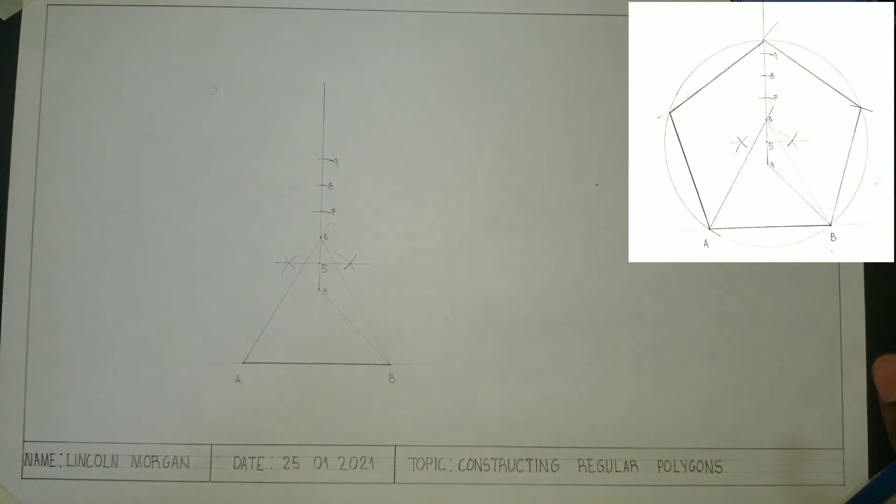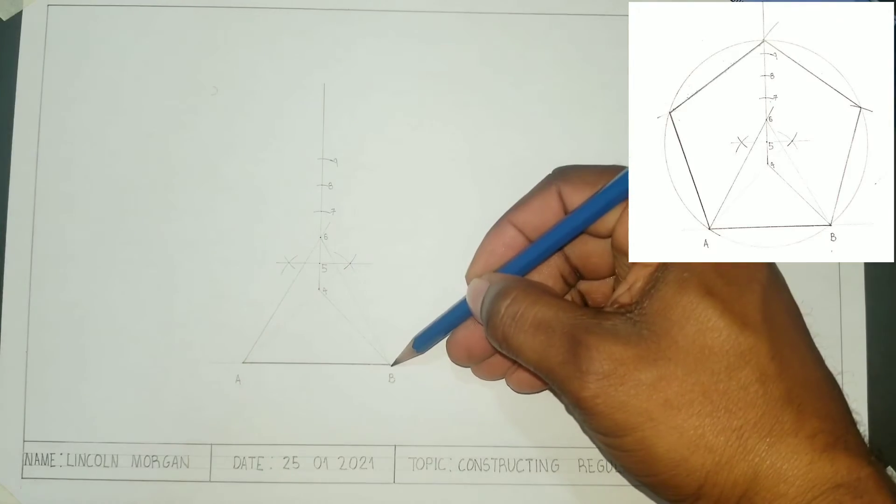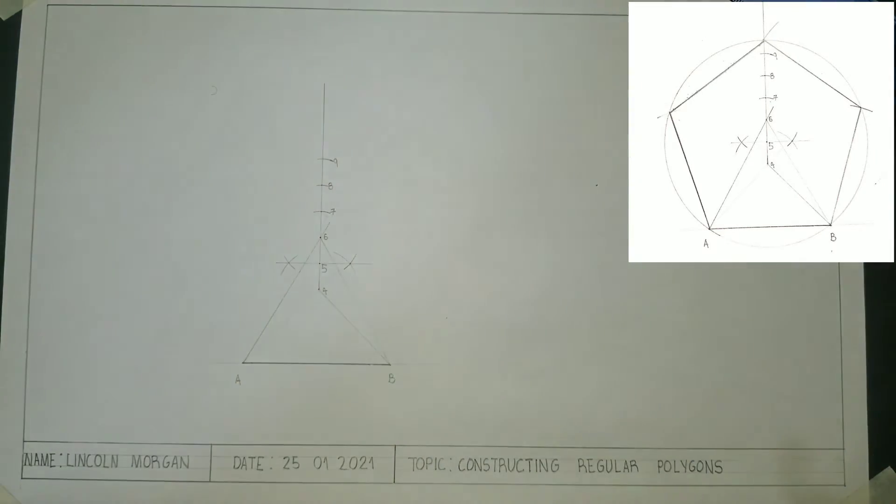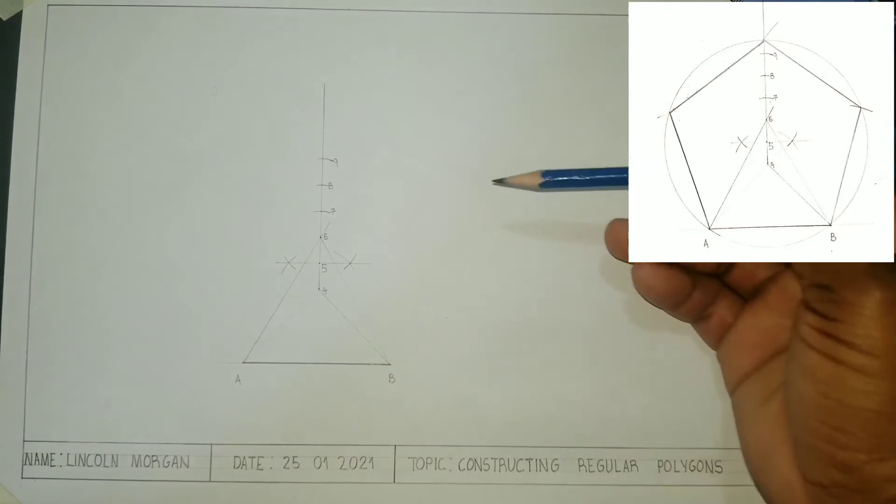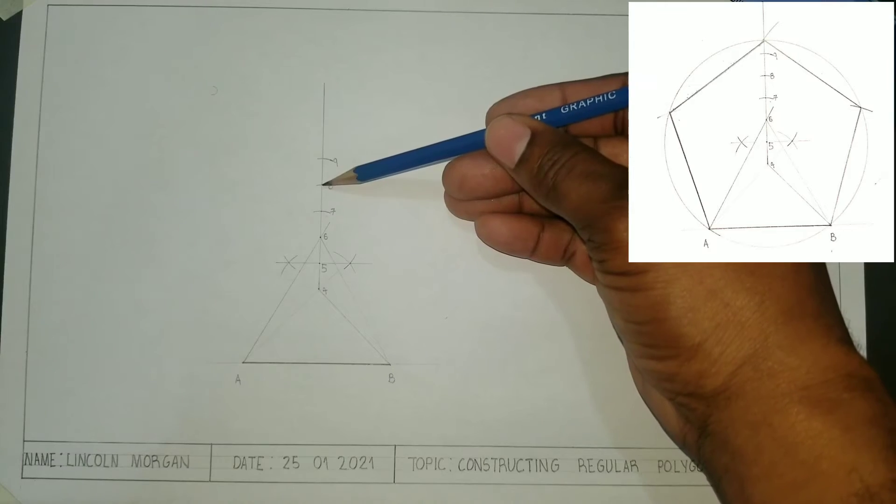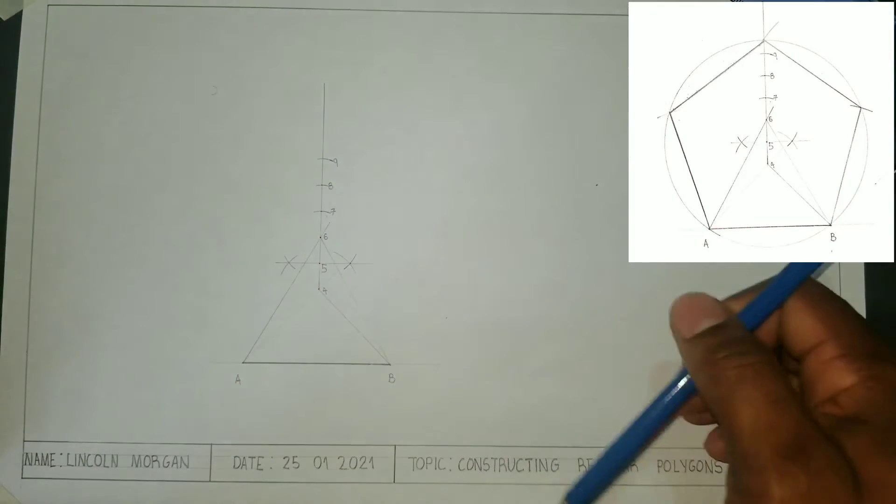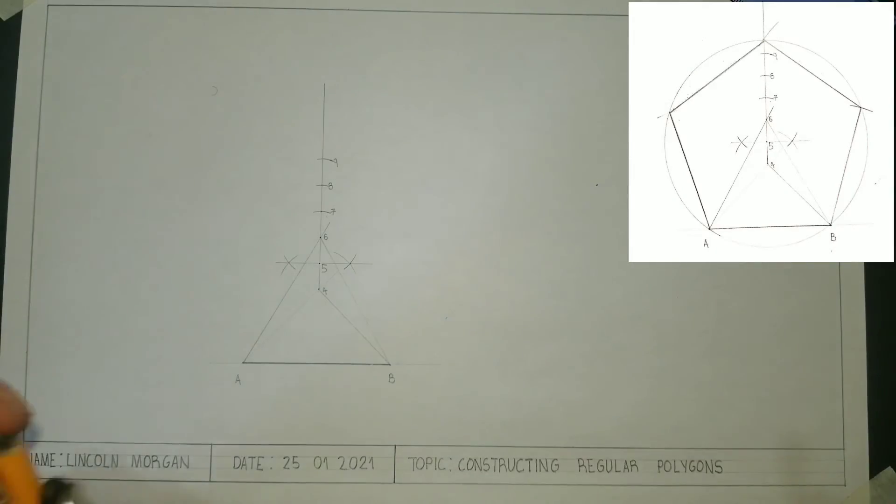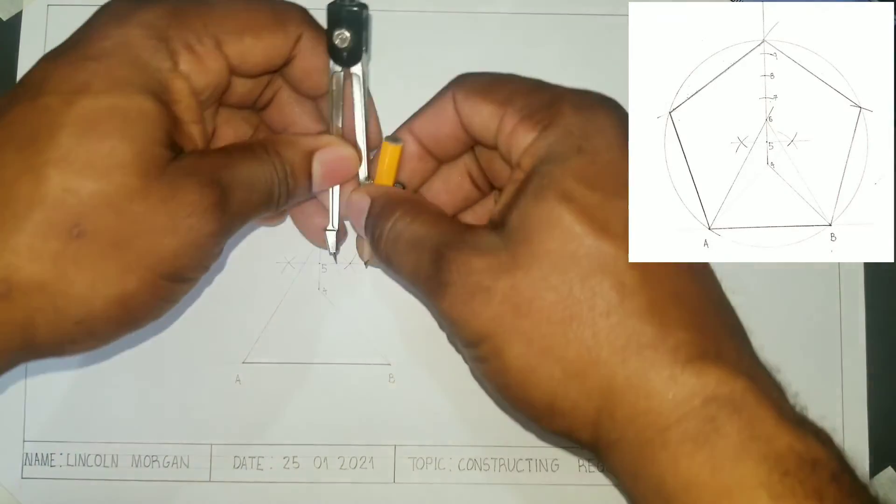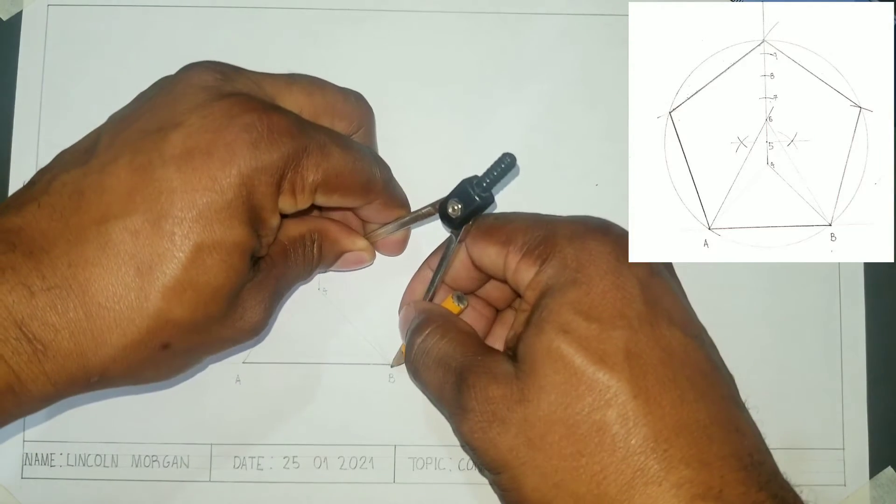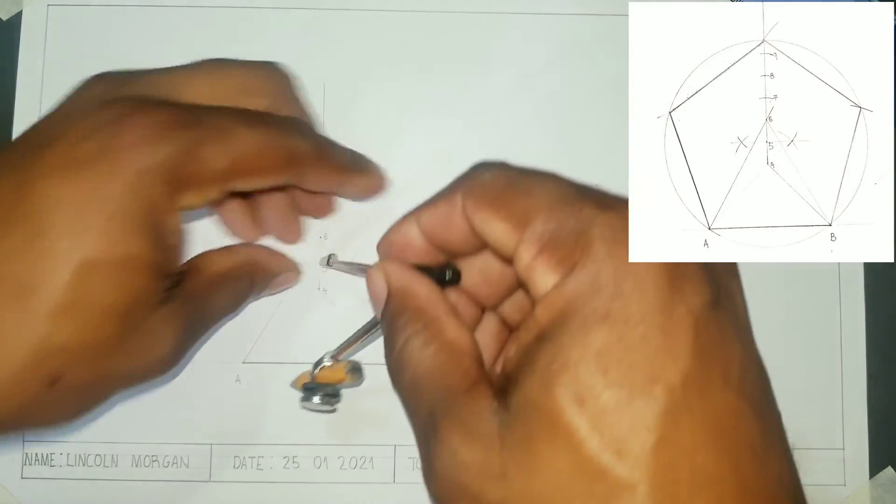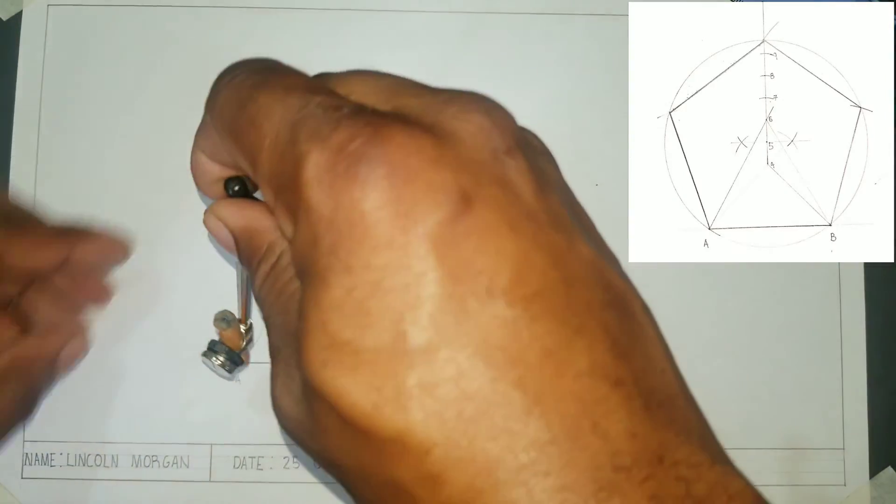Now to construct a regular pentagon, which is a five-sided polygon, we will open our compass from 5 to B and draw a circle. If we wanted to construct an octagon, we would open our compass from point 8 to B. So open your compass from 5 to point B and draw a circle.